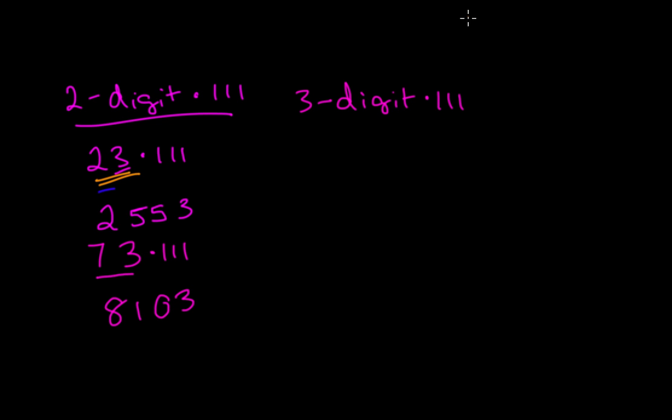Now, what about three-digit numbers times 111? I'm just going to pick a random three-digit number: 217 times 111.